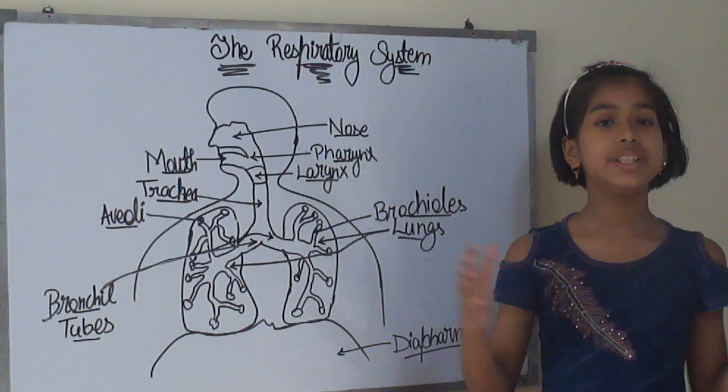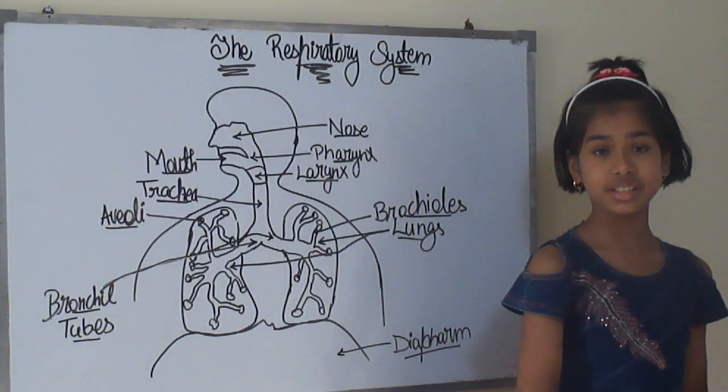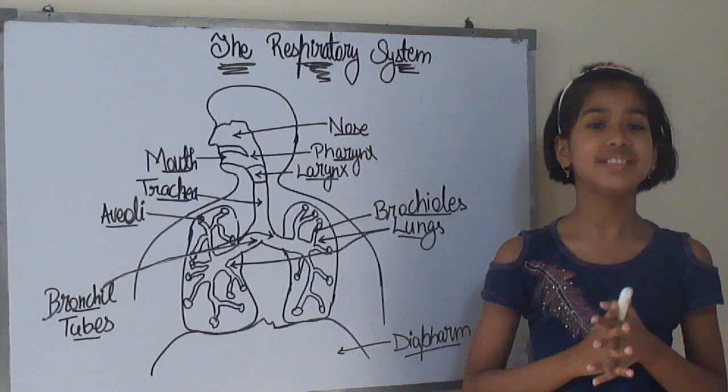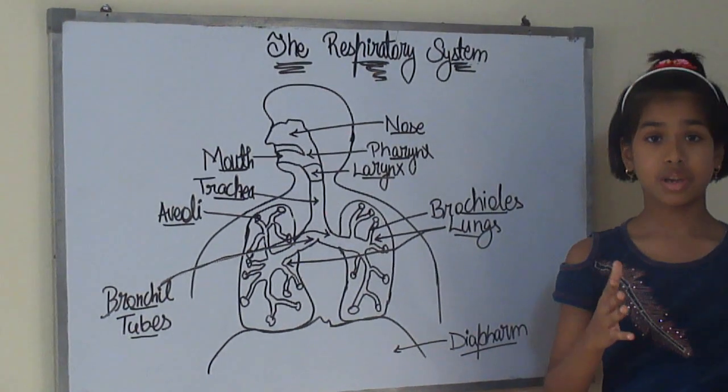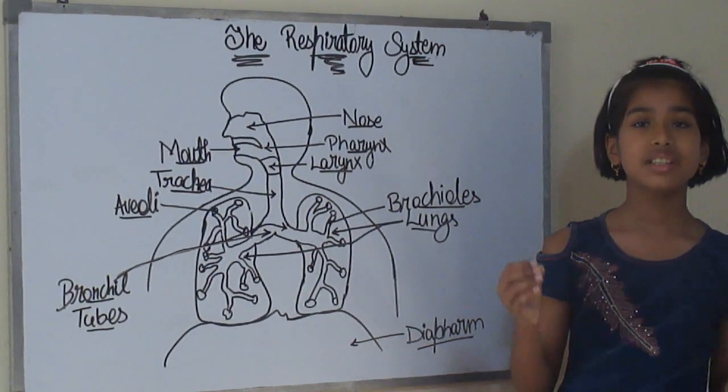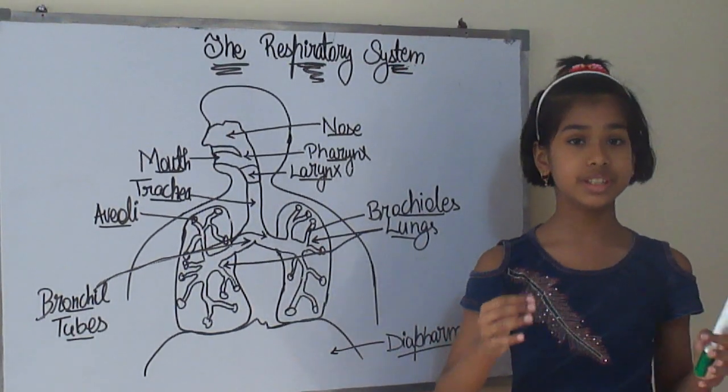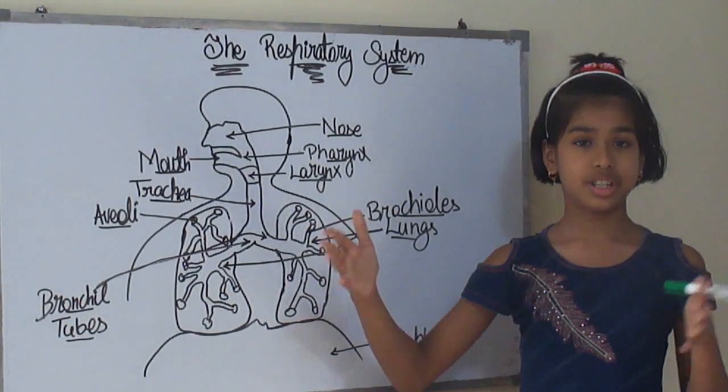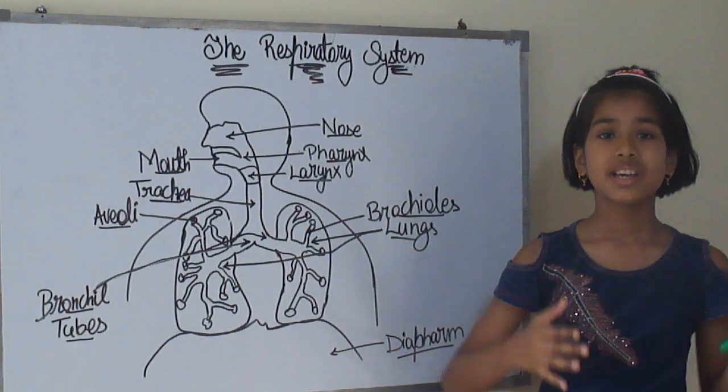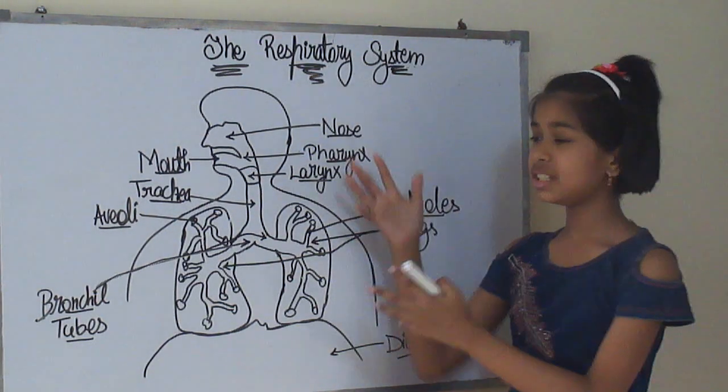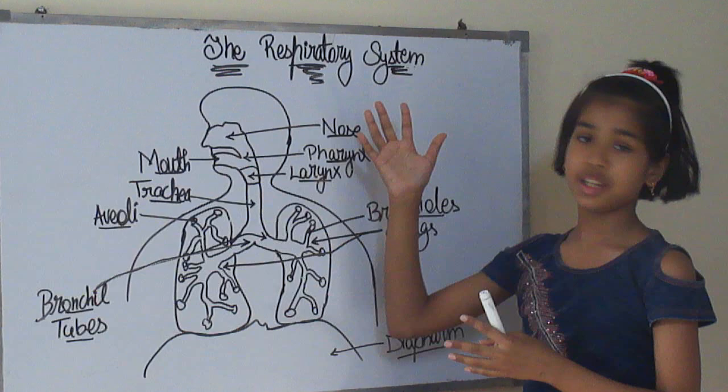When this inhalation and exhalation come together, it forms the breathing system. Talking about respiration, it is a chemical change in our cells. I will tell you in details a bit later. But first, let's study these parts in the respiratory system.